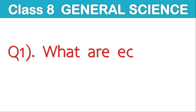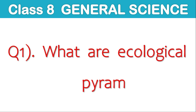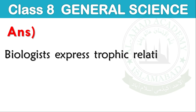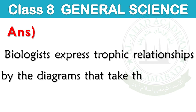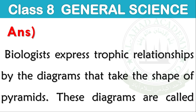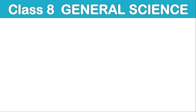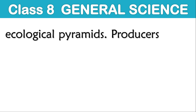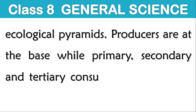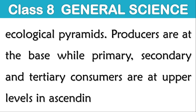Question number 1: What are ecological pyramids? Answer: Biologists express trophic relationships by diagrams that take the shape of pyramids. These diagrams are called ecological pyramids. Producers are at the base while primary, secondary, and tertiary consumers are at upper levels in ascending order.